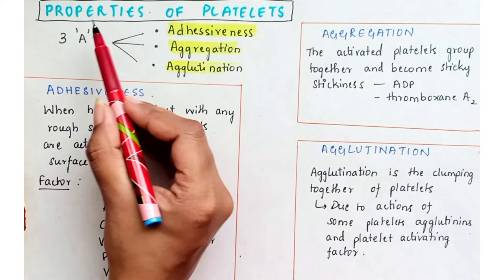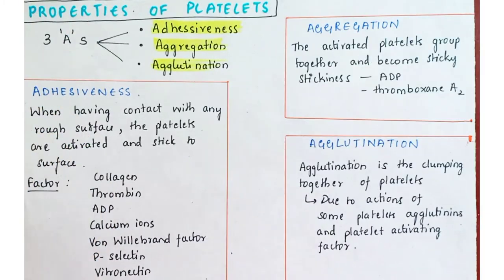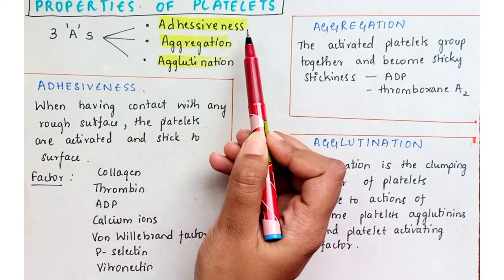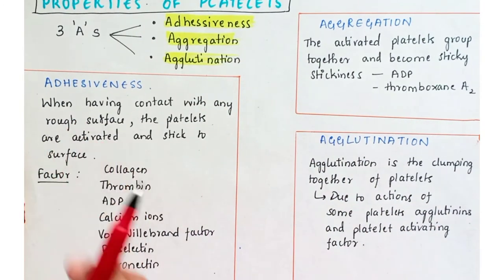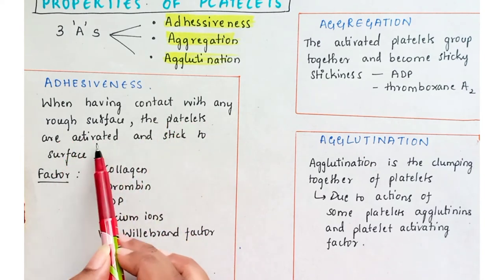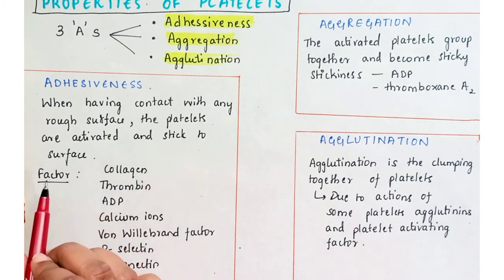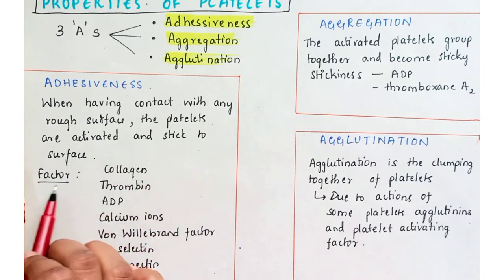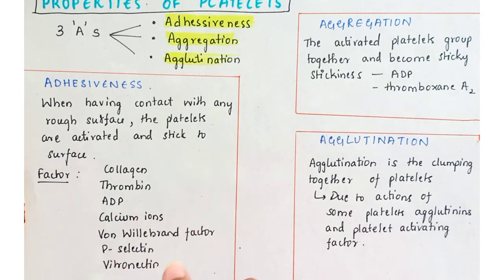The properties of platelets are the three A's: adhesiveness, aggregation and agglutination. Adhesiveness means when platelets contact any rough surface they are activated and stick to it. Factors responsible include collagen, thrombin, adenosine diphosphate, calcium ions, von Willebrand factor, p-selectin and vitronectin.